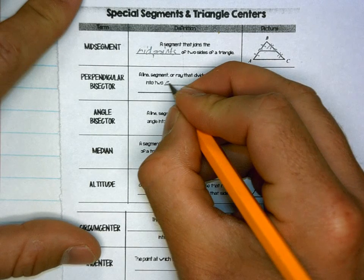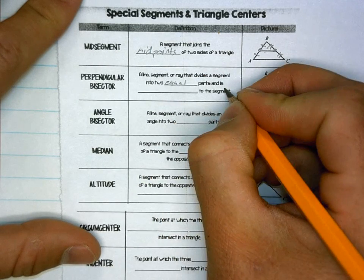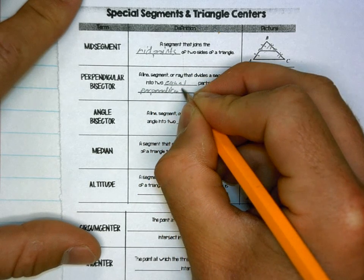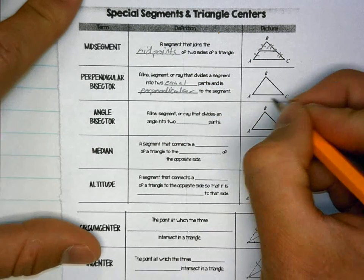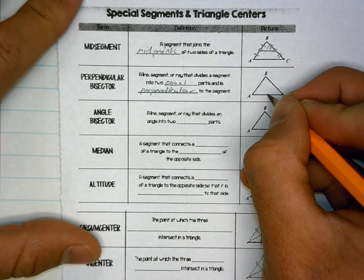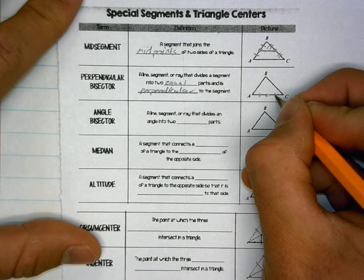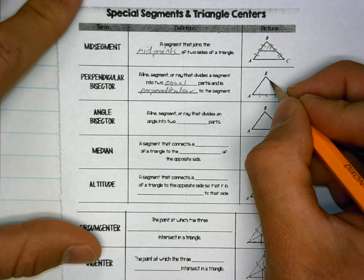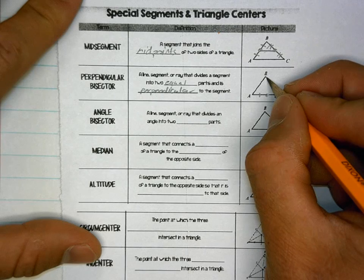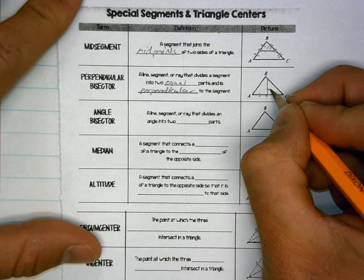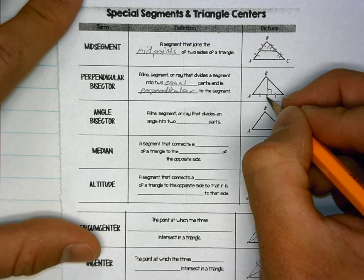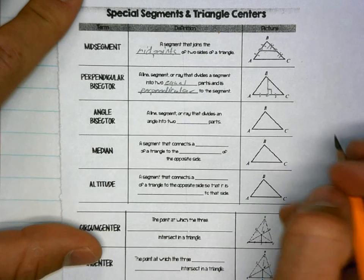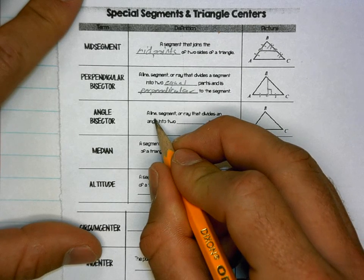Perpendicular bisector: a line segment or ray that divides the segment into two equal parts and is perpendicular to the segment. If I had this side here and divided it into two equal parts, it does not necessarily have to go through the vertex of the other side — it just needs to divide one side into two equal parts and be perpendicular, 90 degrees.